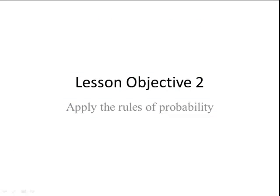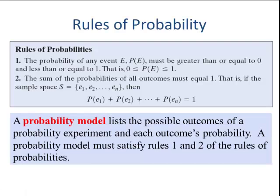Lesson objective number 2. There are two rules for probability. Rule 1: for each event, the probability must be greater than or equal to zero and less than or equal to one — that is, 0 ≤ P(E) ≤ 1. Rule 2: the sum of all the outcomes must equal one. If we add up the probabilities of all simple events, they will equal one.